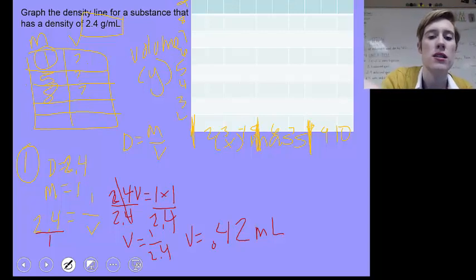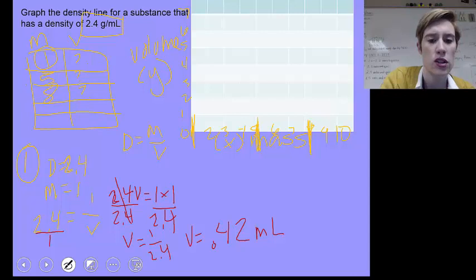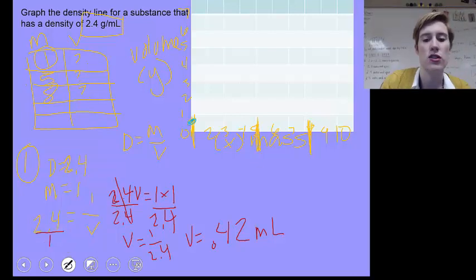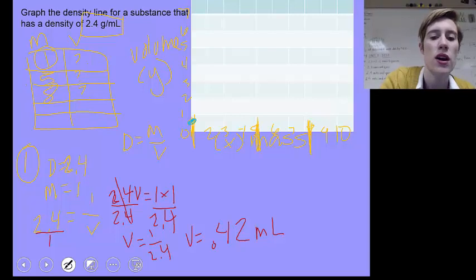So our volume is 0.42 milliliters. So when our mass is 1, then what is our volume? Our volume is 0.4. So this is our first dot. Let me make it with a different color so you can actually see it. That's our first dot. When mass is 1, volume is like half of 1.